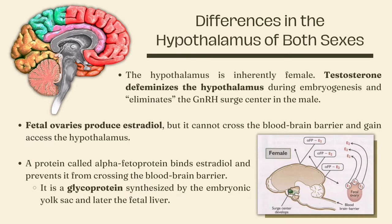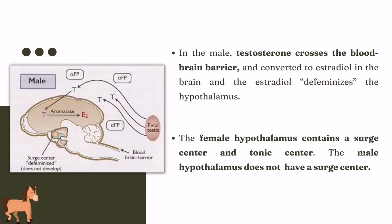Alpha-fetoprotein is a glycoprotein synthesized by the embryonic yolk sac and later the fetal liver that serves as a fetal blood osmotic regulator and a carrier of fatty acids. In the male, testosterone freely enters the brain because alpha-fetoprotein does not bind it. Testosterone is aromatized into estradiol and the male brain is defeminized. Therefore, a gonadotropin-releasing hormone surge center does not develop.